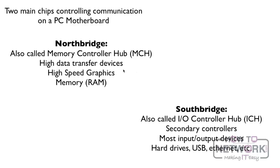So when you see North Bridge or South Bridge on the exam and it asks what device is transferred over those, remember that the only devices using the North Bridge are high-speed graphics and RAM. If you can remember this, it makes it very easy to answer any questions. North Bridge: high-speed graphics and RAM. South Bridge: everything else.